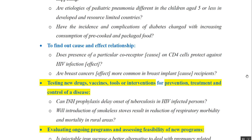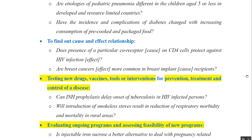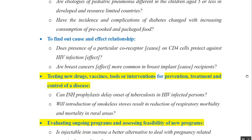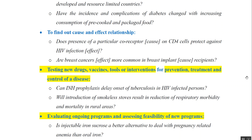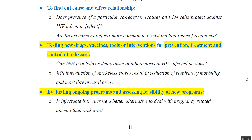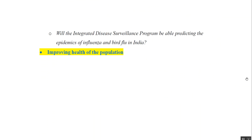The next objective is evaluating ongoing programs and assessing the feasibility of new programs — for instance, is injectable sucrose a better alternative to deal with pregnancy-related anemia than oral iron? The final objective is improving the health of the population.